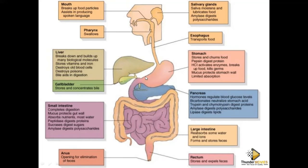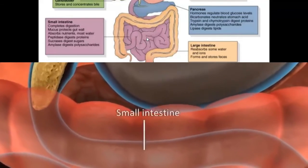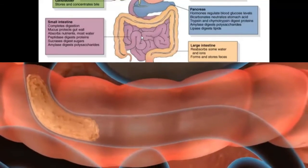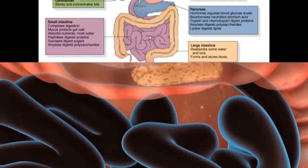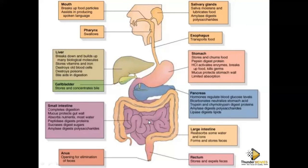From the duodenum until the ileum, we call it the small intestine. Final digestion and absorption take place in the small intestine. If you don't have this part in the body, you will suffer from hunger — even if you eat, the food will go out without being absorbed.